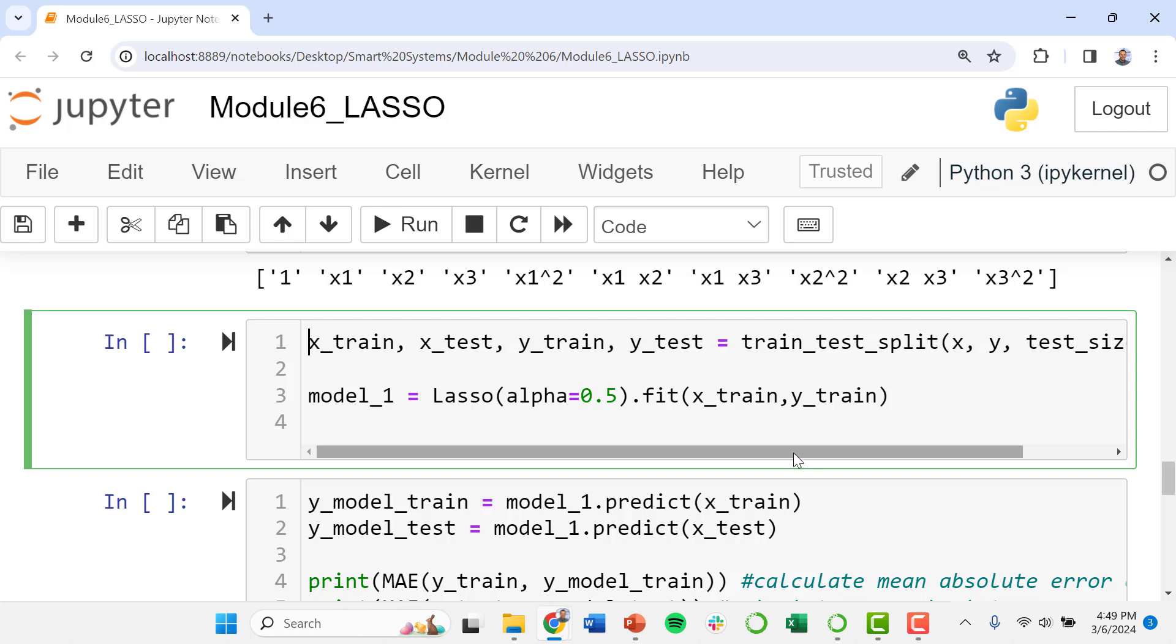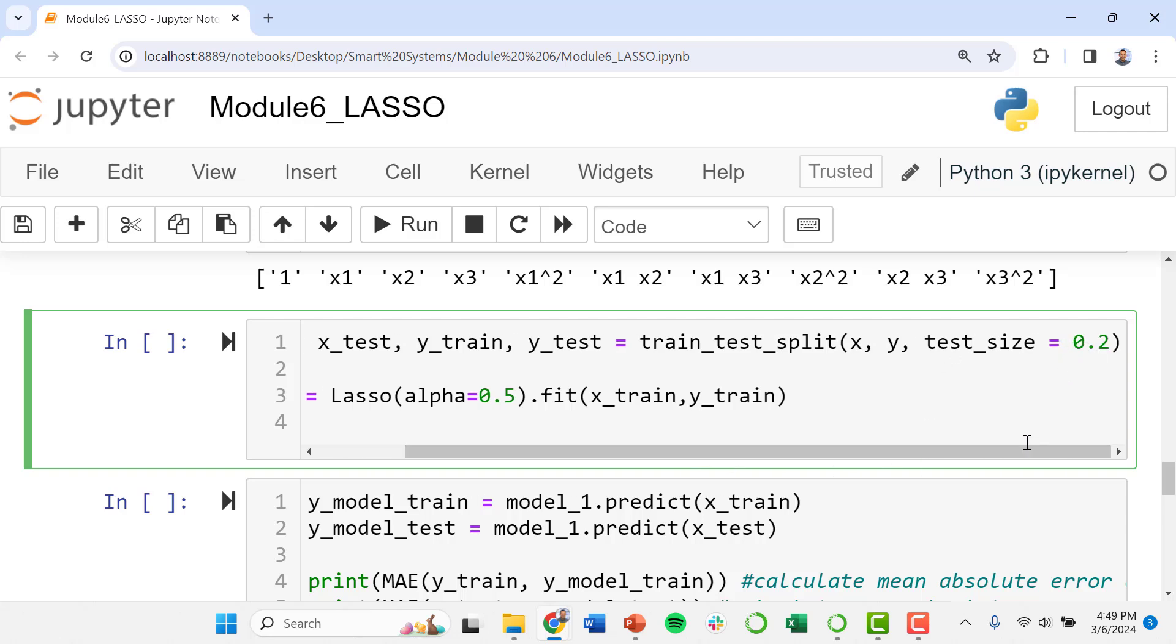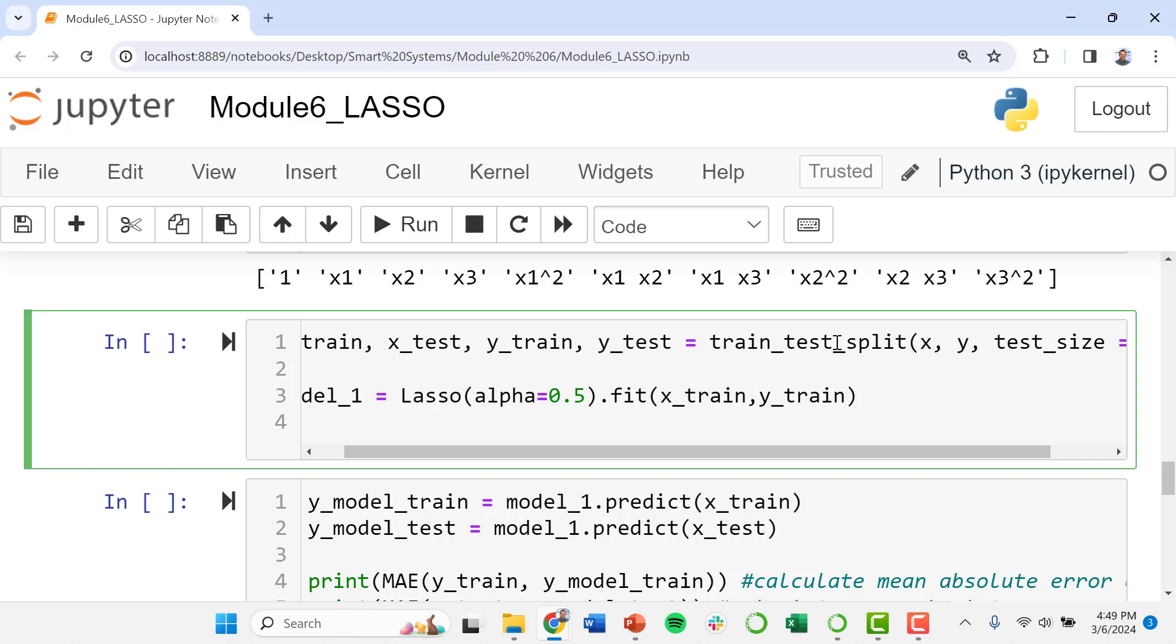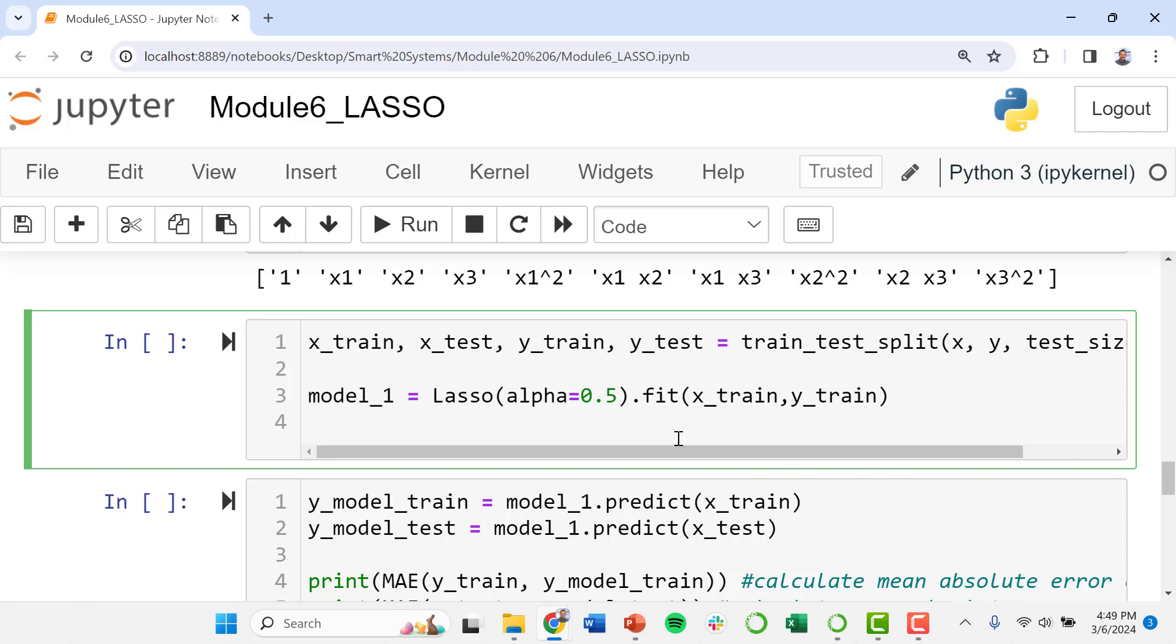We're dealing with a second order polynomial model. We divide our data up into training and testing data using testing data of twenty percent and this train test split will do that for us randomly. It randomly picks out twenty percent to call the testing data. The other eighty percent is the training data.